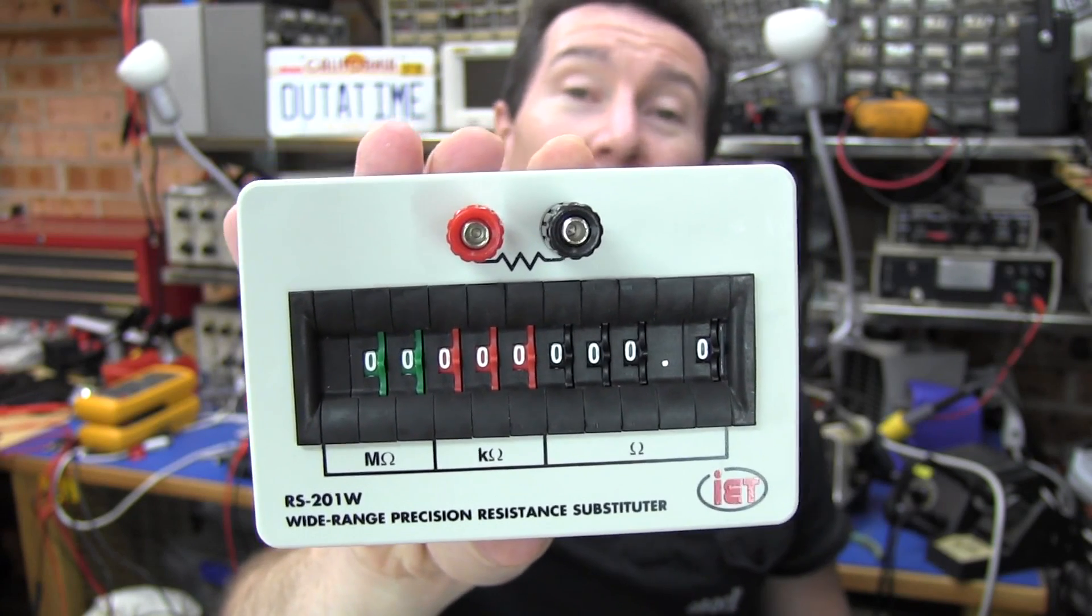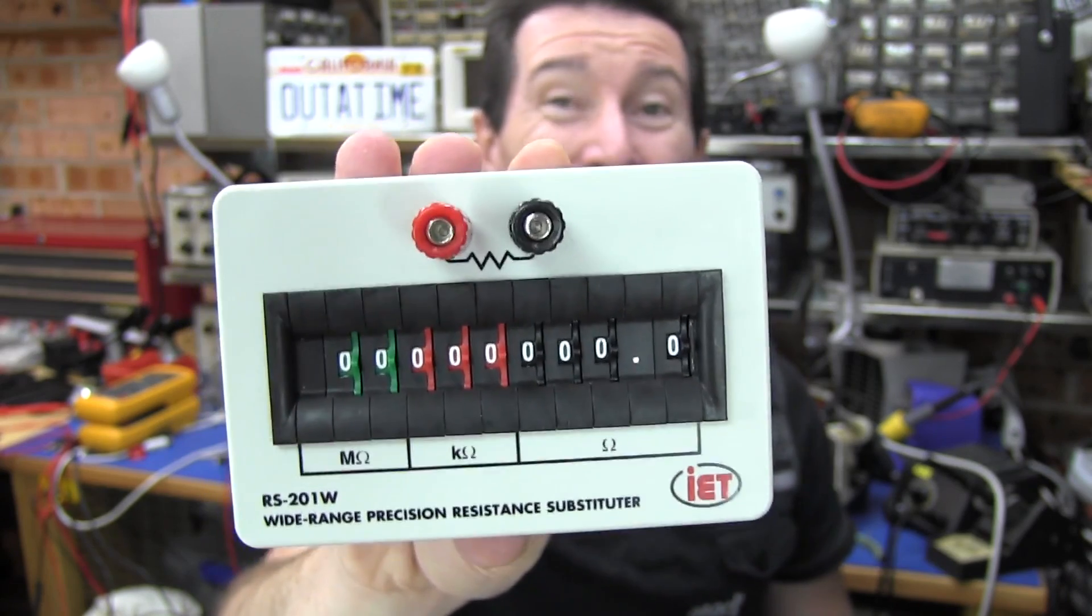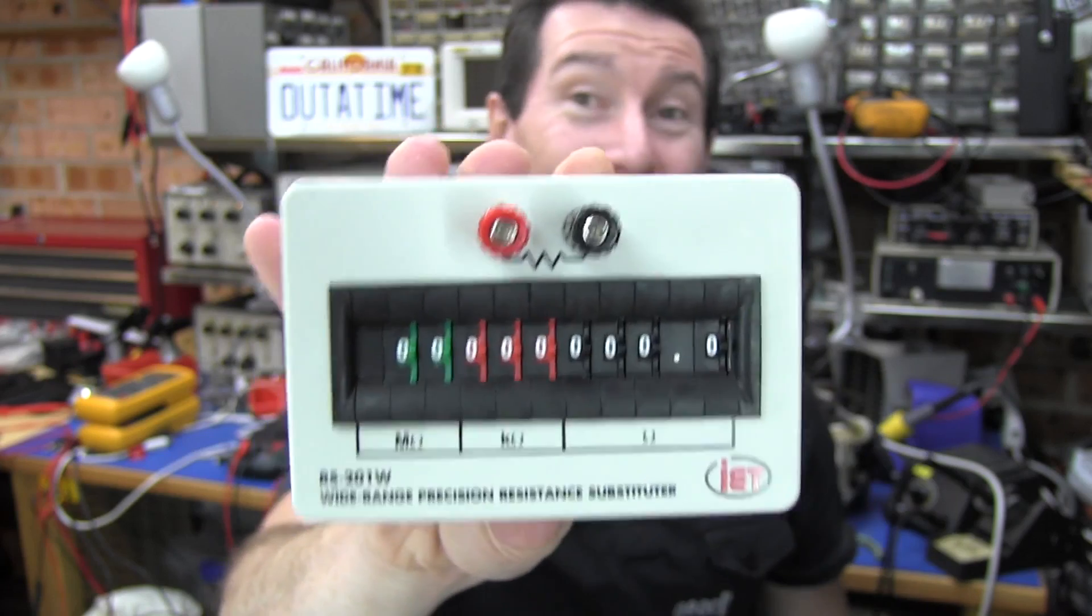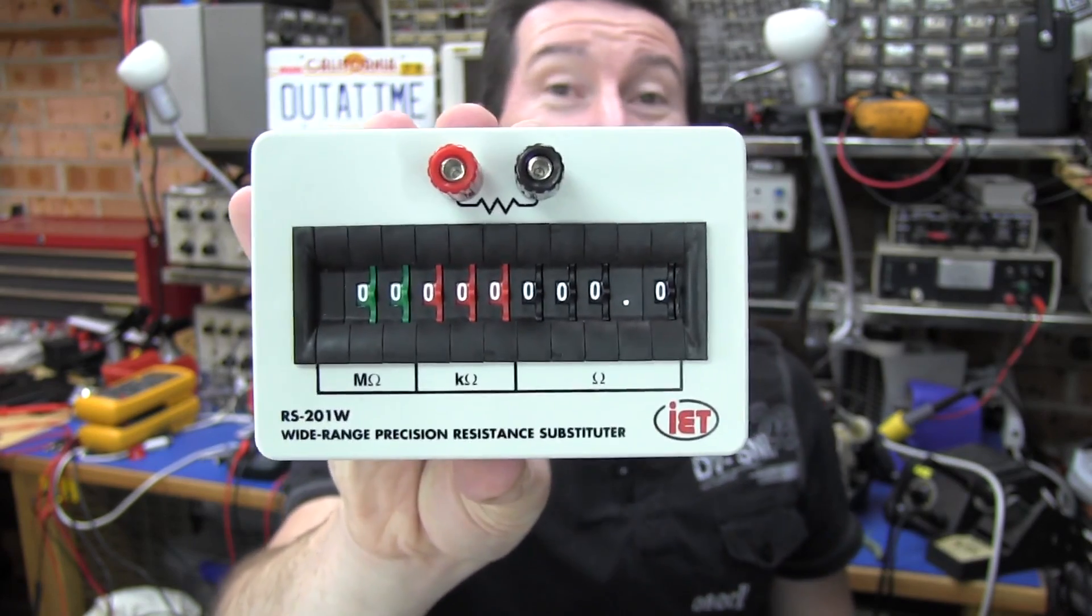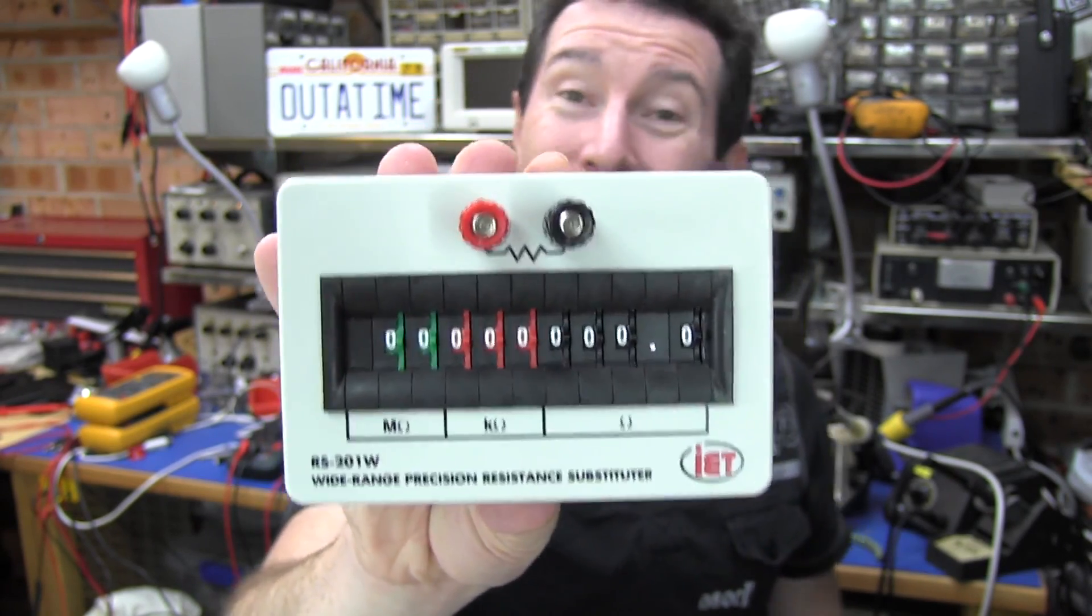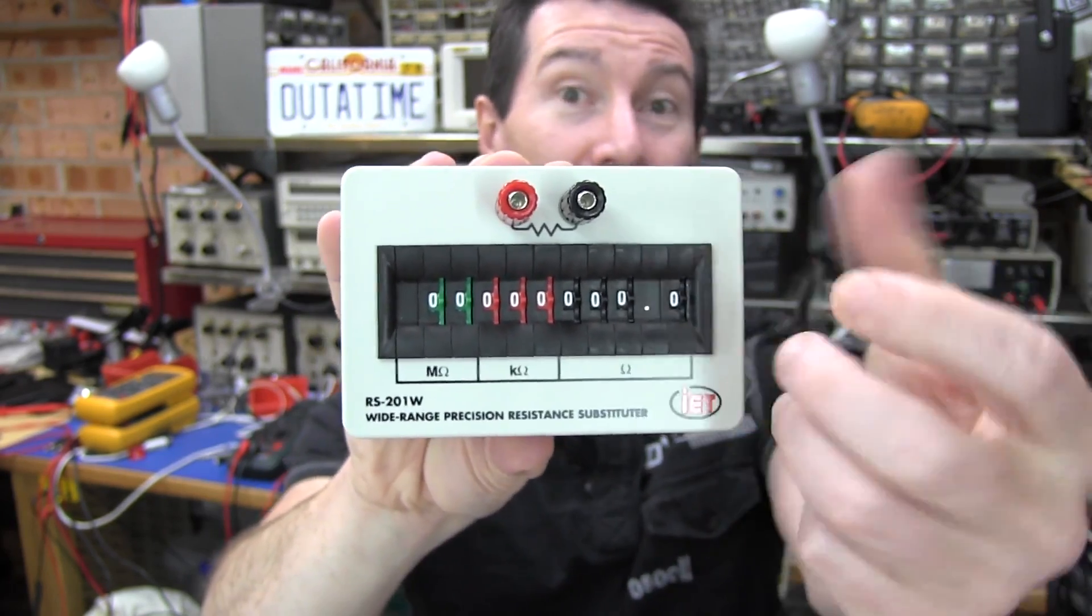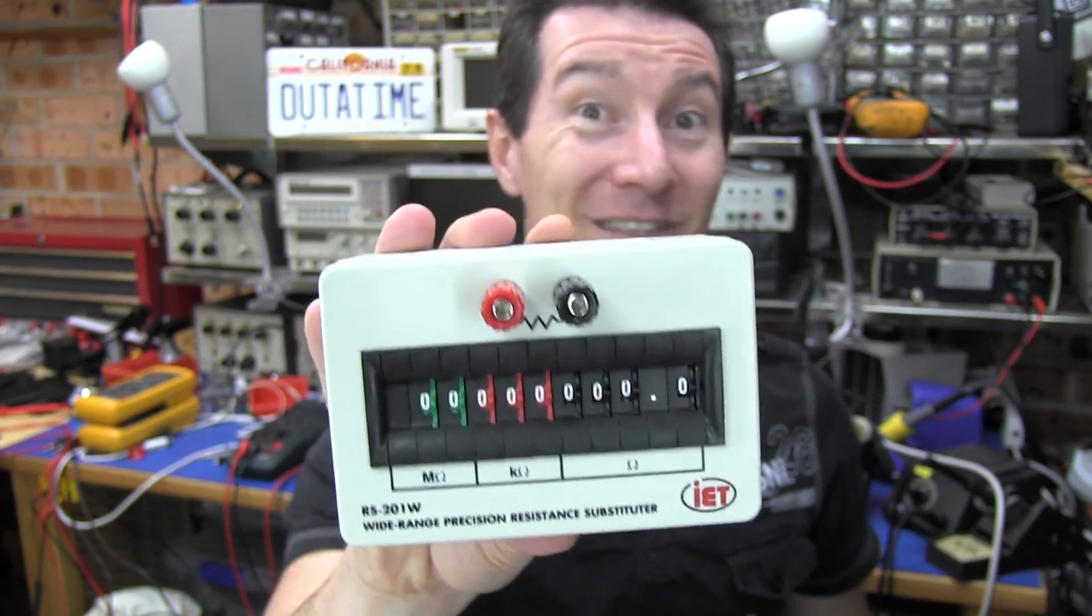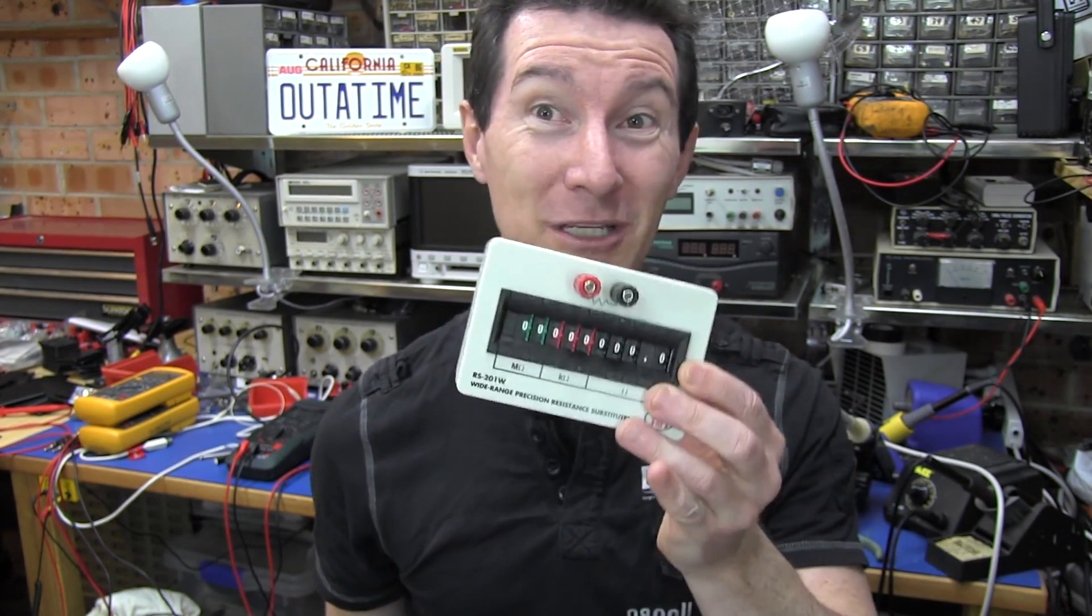This particular one I've got from IET Labs is the RS201W. It's a nine decade box, you can tell because it's got nine different switches on there from zero to nine. It goes from 0.1 ohms up to 100 megohms, 0.1% basic tolerance, and uses thumb wheel switches instead of the traditional style rotary ones. Really quite nice. Not exactly the hobbyist affordable level though. It's $539 US bucks.